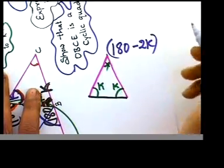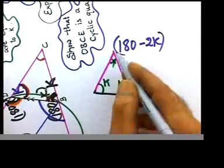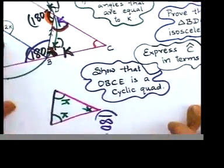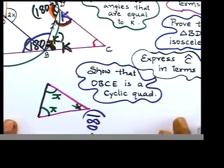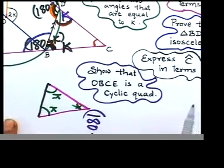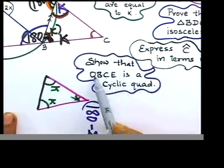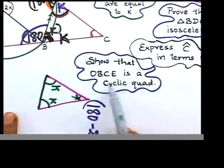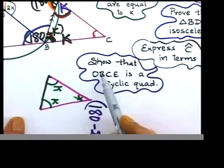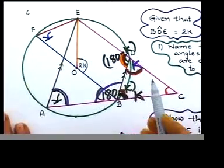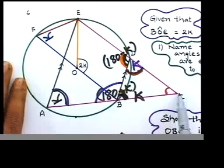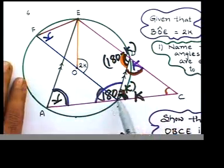That was BDC triangle story. That's what they asked you to find. The last one says let's prove that or show that OBCE is a cyclic quadrilateral. Where is O? O, B, C, E. This one should be a cyclic quadrilateral.